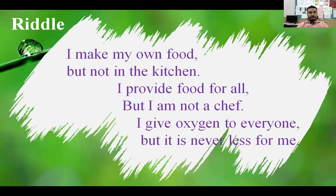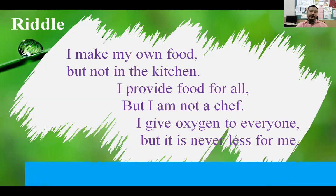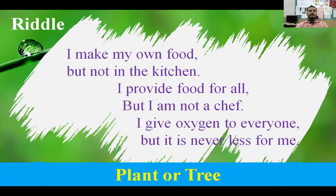I make my own food but I am not in the kitchen. I provide food for all but I am not ashamed. I give oxygen to everyone but it is never less for me. So guess what it is. Yes, many of you might have guessed it correctly — the correct answer is plant or tree. Plants make their own food but not in the kitchen, and they provide oxygen to everyone but never take it.